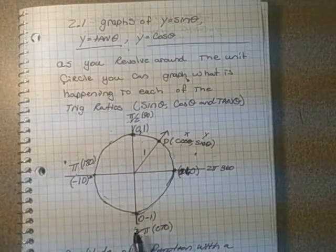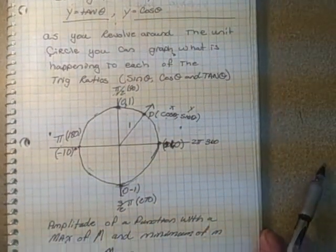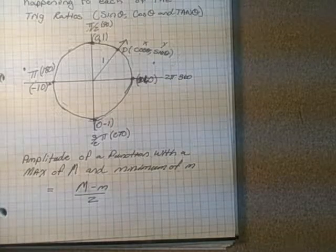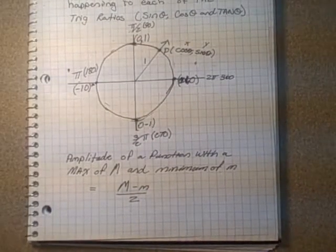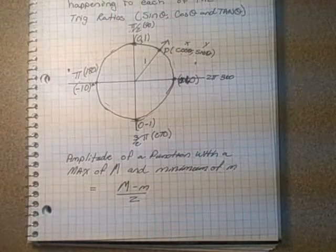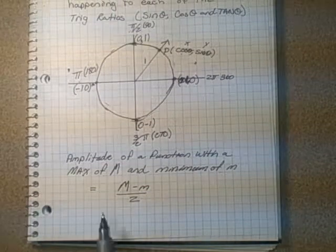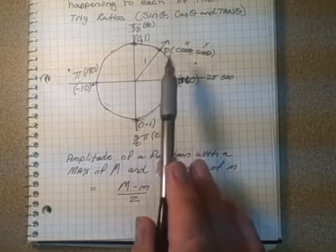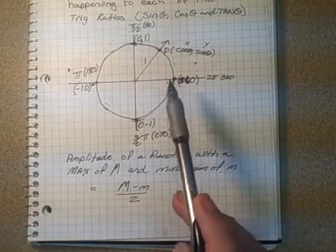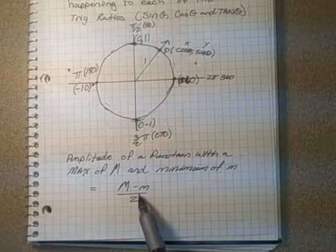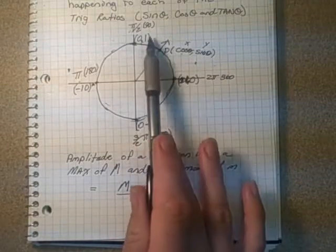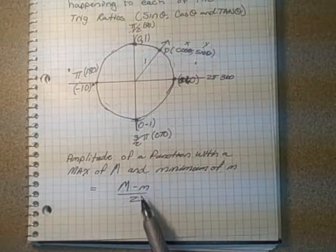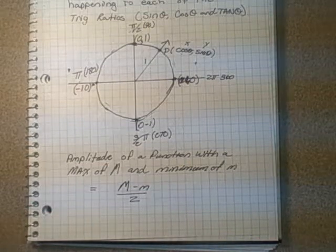The last thing before drawing the graphs is to define amplitude of a function. The amplitude of any function is its maximum value minus its minimum value, divided by two. For the sine function, we have 1 minus (-1), which equals 2 over 2. So the amplitude of sine and cosine is actually one.